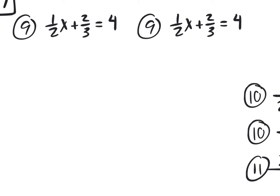Which fraction would you like to get rid of first? The 2 thirds. So I want to multiply the 2 thirds times 3 — but I also need to multiply the first fraction by 3 and the 4 by 3. Everything by 3. The 3 and the 3 cancel — 3 divided by 3 is 1 — I end up with a nice plus 2. Over here, 4 times 3 is 12. But this 3 does not cancel with the 2 in that other fraction — I actually have to multiply 3 times the numerator 1, giving 3 over 2x.